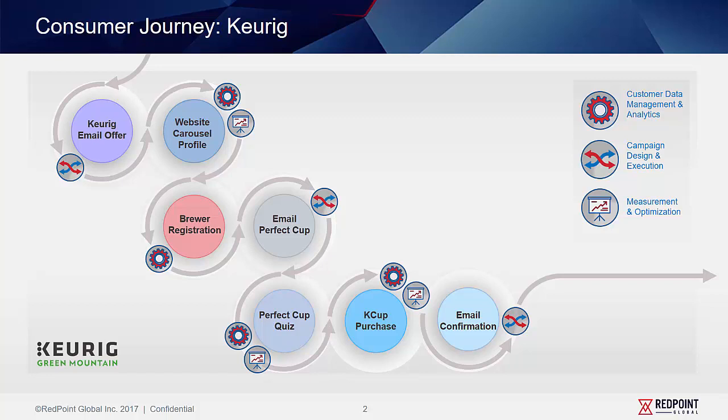For the consumer journey, we'll show an email campaign arriving to an existing Keurig customer. From there, we'll click through the email and land on the Keurig website where we'll explore the customer profile in various states and view offers that are presented. From there, we'll register a new brewer which will trigger a new email campaign with additional offers including the Perfect Cup survey experience. We'll then take a look at the survey and recommendations that are generated and make an additional purchase, which will trigger a transactional email confirmation which we'll view on a mobile device.